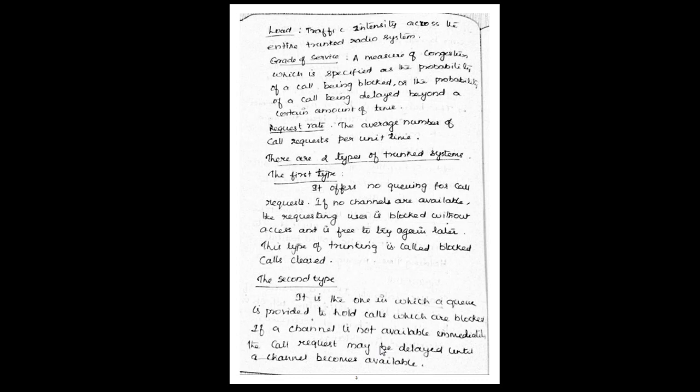Traffic intensity across the entire trunking radio system represents the total load. Grade of service is a measure of congestion, specified as the probability of a call being blocked or the probability of a call being delayed beyond a certain amount of time.